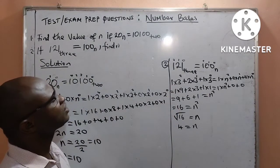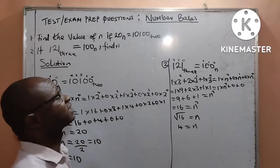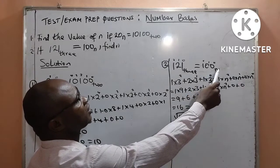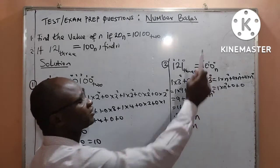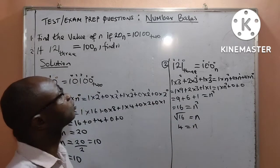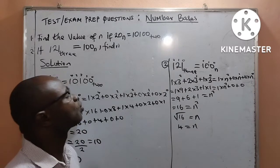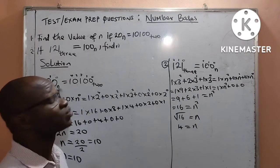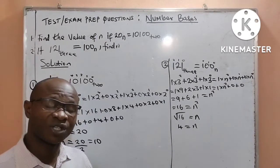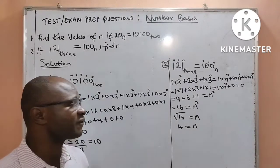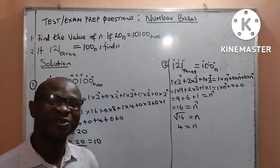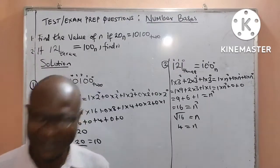Therefore, what we actually have on the right-hand side is 100 base 4 — that is, the value of N is 4 — and what we have on the left-hand side is 121 base 3. Thank you for watching this video to the end. If this is your first time coming by, please subscribe to my channel as a way of supporting me. I remain Tutor Kletusukoli, your master tutor. God bless you.